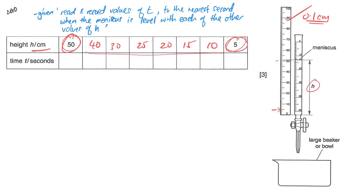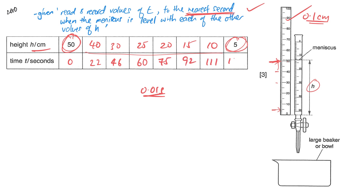The experiment runs continuously — the stopwatch never stops. You start timing when the water level reaches 50, then record the time when it reaches 40, 30, and so on. Because of the nature of this experiment, the instruction tells you to record the digital stopwatch to the nearest second, even though the stopwatch normally reads to two decimal places. Always follow the instruction. The readings would be something like 22, 46, 60, 75, 92, 100, 136, and so forth. Once done, plot the graph.